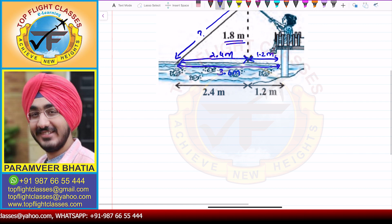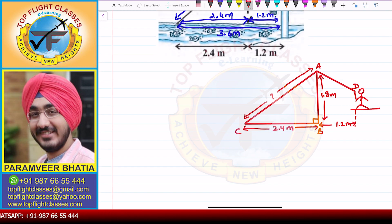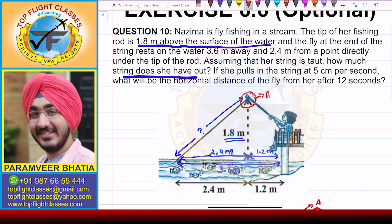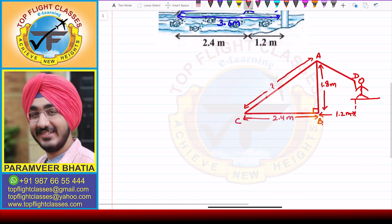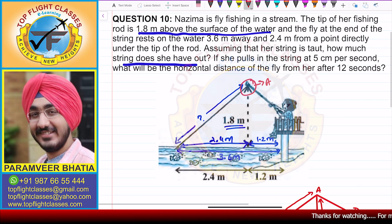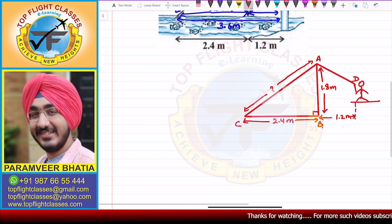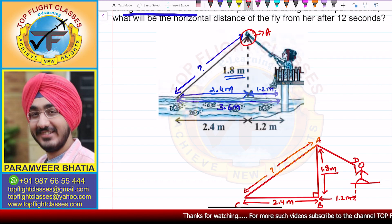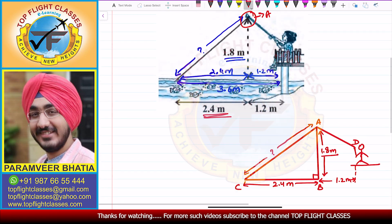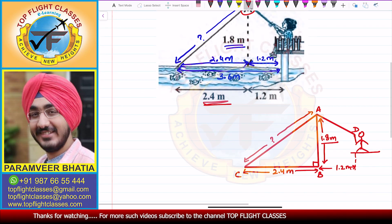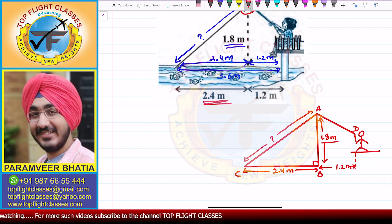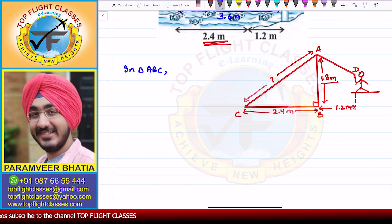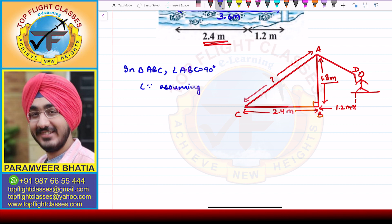Let us draw the diagram first. Let point A be the highest point of the fishing rod, and point B be on the surface of the water directly below A. So AB is the height of the fishing rod above the surface of the water, which is given as 1.8 meters. In triangle ABC, angle ABC is equal to 90 degrees, because we are assuming the surface of the water is a plane and the rod is vertically above it.